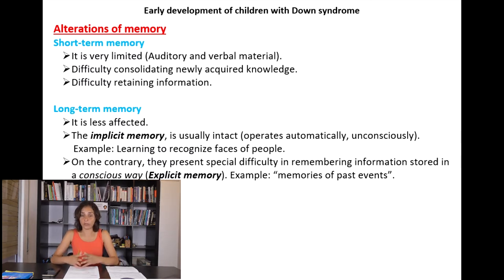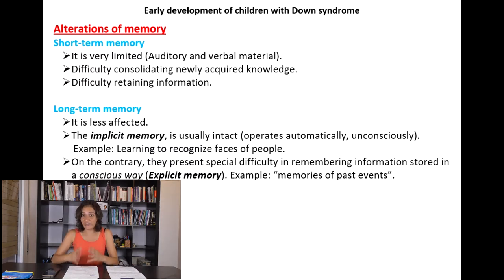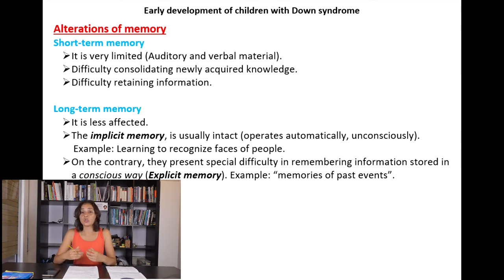Another alteration that may happen in Down syndrome is alteration of memory, including both short-term and long-term memory. Short-term memory is very limited, especially for auditory and verbal material. There is difficulty consolidating newly acquired knowledge, which has an impact on slower learning. There is also difficulty retaining information, so brevity of the message and repetition can help consolidate information in memory.